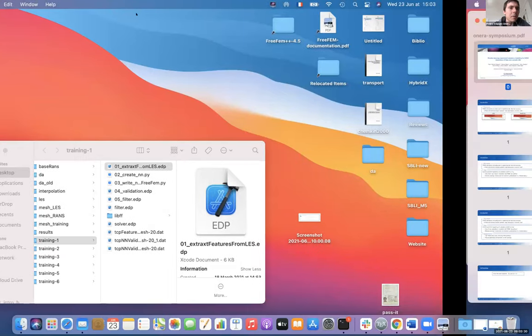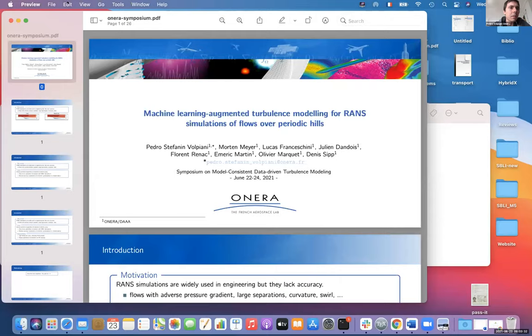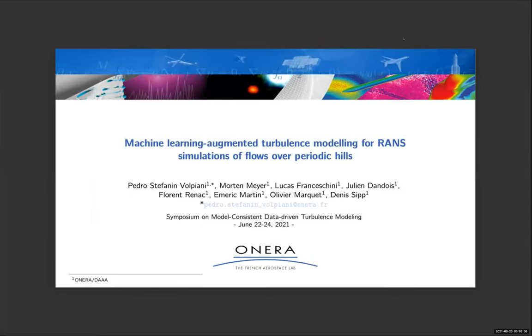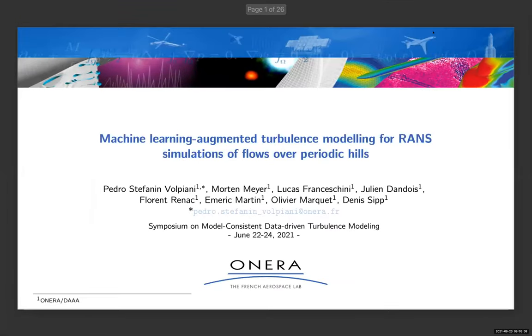So I'm going to start. My name is Pedro Volpiani and my colleagues and I, we work at ONERA and I'm here today to talk about machine learning augmented turbulence modeling for RANS simulations of flows over periodic hills.